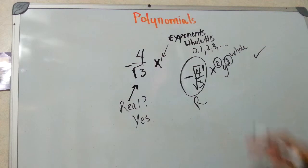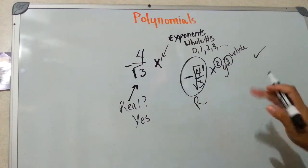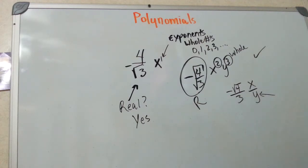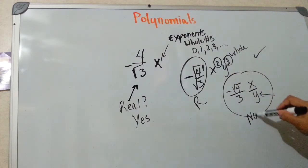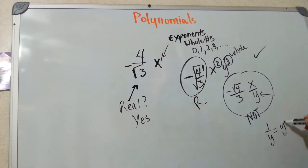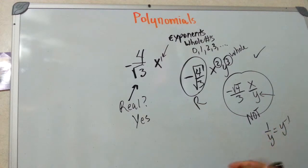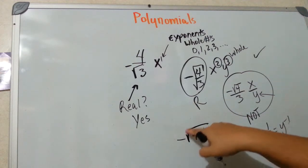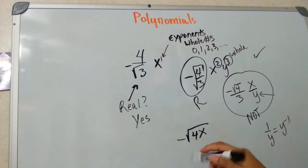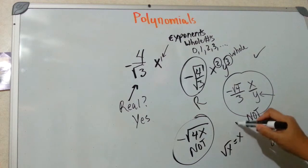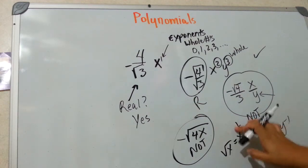What would make something not a polynomial? If you had a variable in the denominator, like this — you see that variable in the denominator? This is not a polynomial. The reason is that 1 over y is actually y to the negative 1, which means you don't have a whole number as your exponent. Or if you have a variable under a radical — you see how the x is underneath the radical sign? That's not valid. This would not be a polynomial because your exponent would be a fraction.